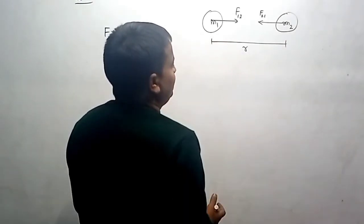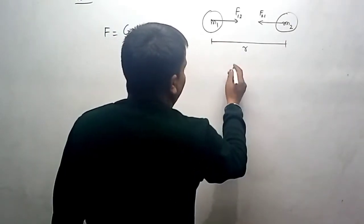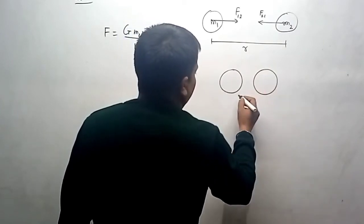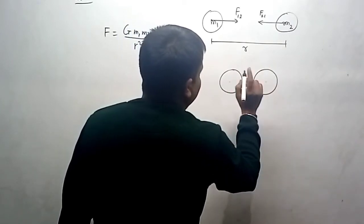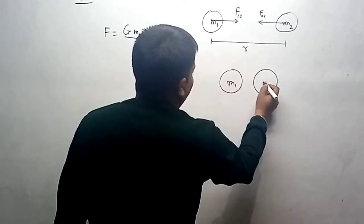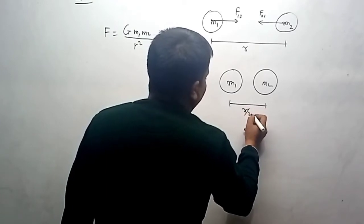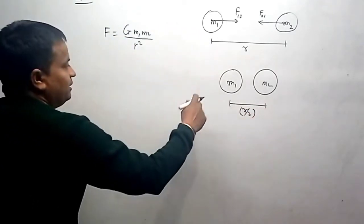If these two masses have been kept close to each other, so nothing has changed in masses - this is m1, this is m2, and the distance between them has changed to r by 2. Very simple. Now in this situation we will calculate force.